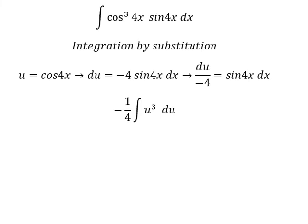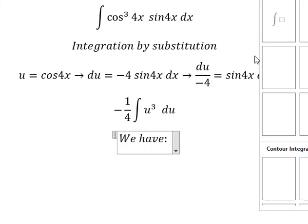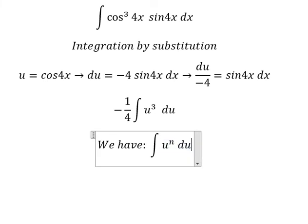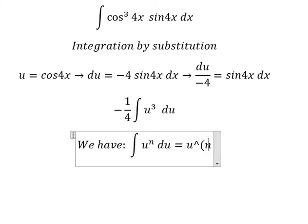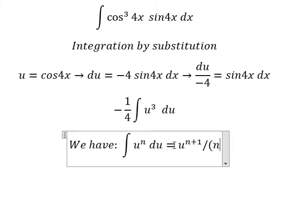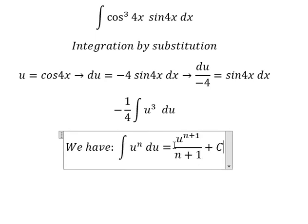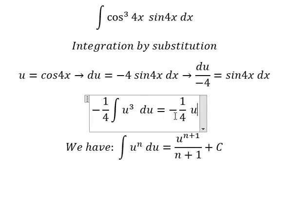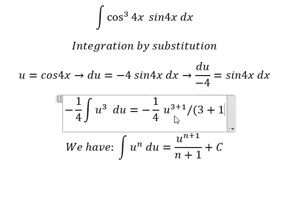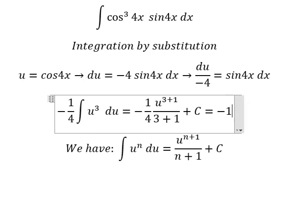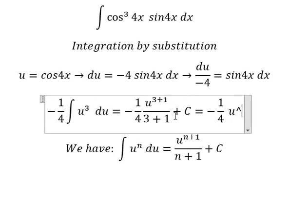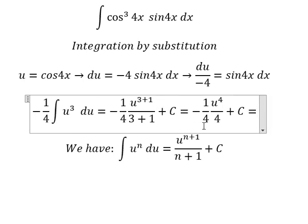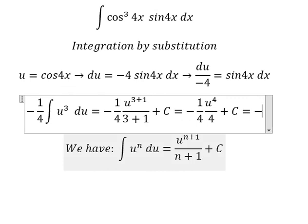Next we have the second formula. So we put number 3 for n and we have the final answer: negative 1 over 16 times u to the fourth, which simplifies to negative 1 over 16.